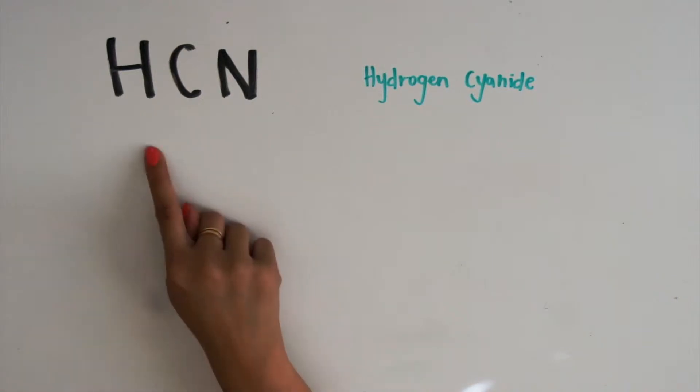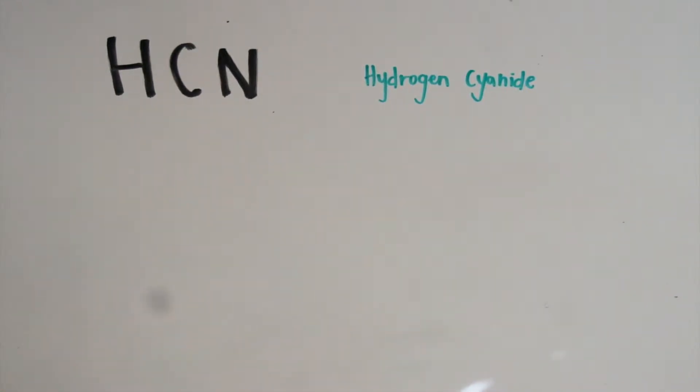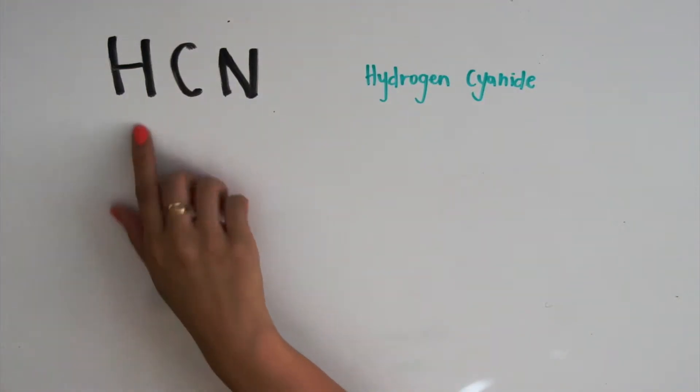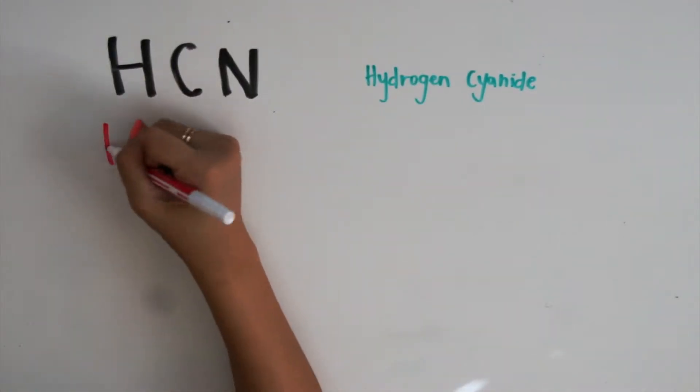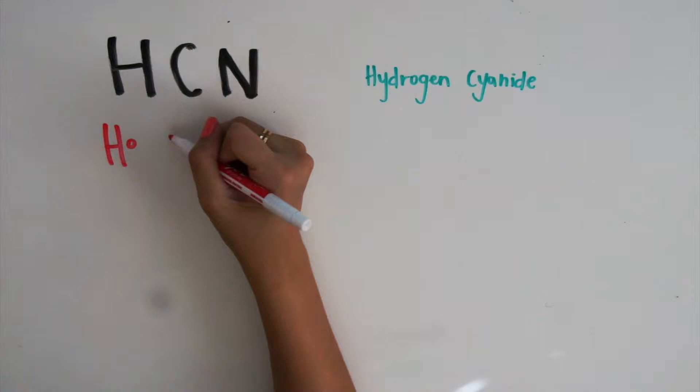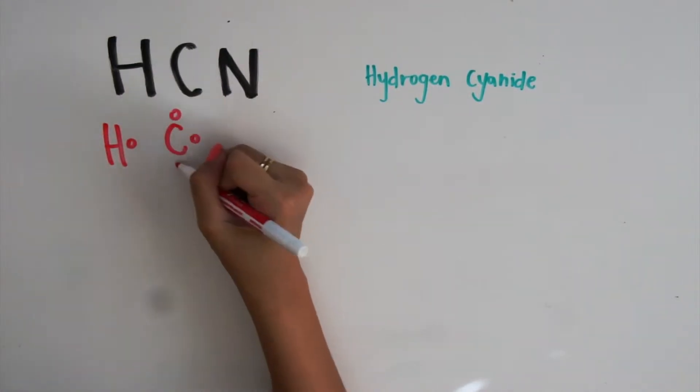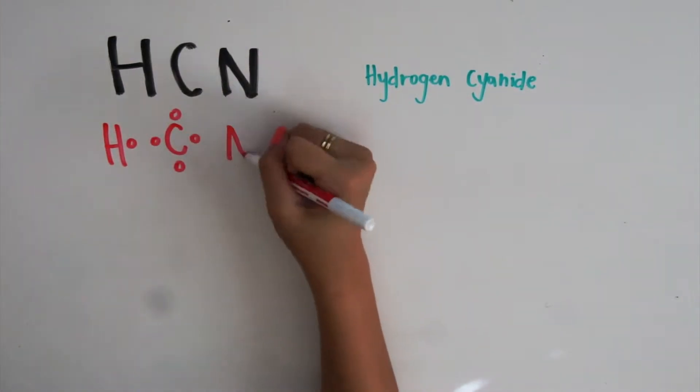In our first example, we have hydrogen, carbon, and nitrogen, a compound known as hydrogen cyanide. To begin, you need to know how many valence electrons are in each of these atoms. Hydrogen has 1, carbon has 4, and nitrogen has 5.